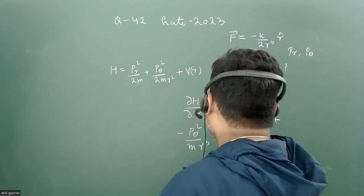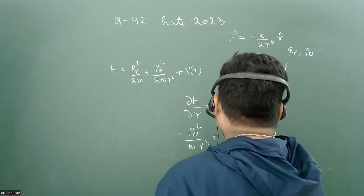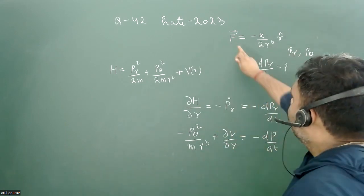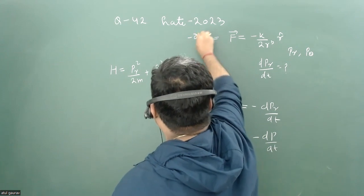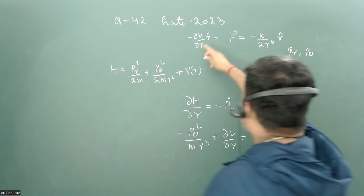Plus del V/del r equals minus dpr/dt. The force is given, so this force can also be given as minus del V/del r in the r cap direction.